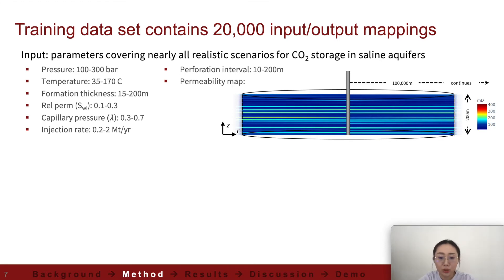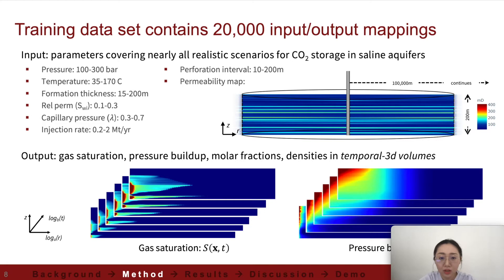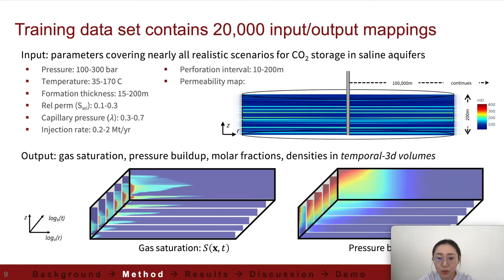In total, we made 20,000 such input combinations. We then ran the commercial numerical simulator Eclipse by Schlumberger to obtain a large dataset with outputs of gas saturation, pressure buildup, molar fraction, and densities at different time steps. We configured all of the data outputs using a transformation to obtain a temporal 3D volume, which was then used to train our deep learning models in the prediction sequence.